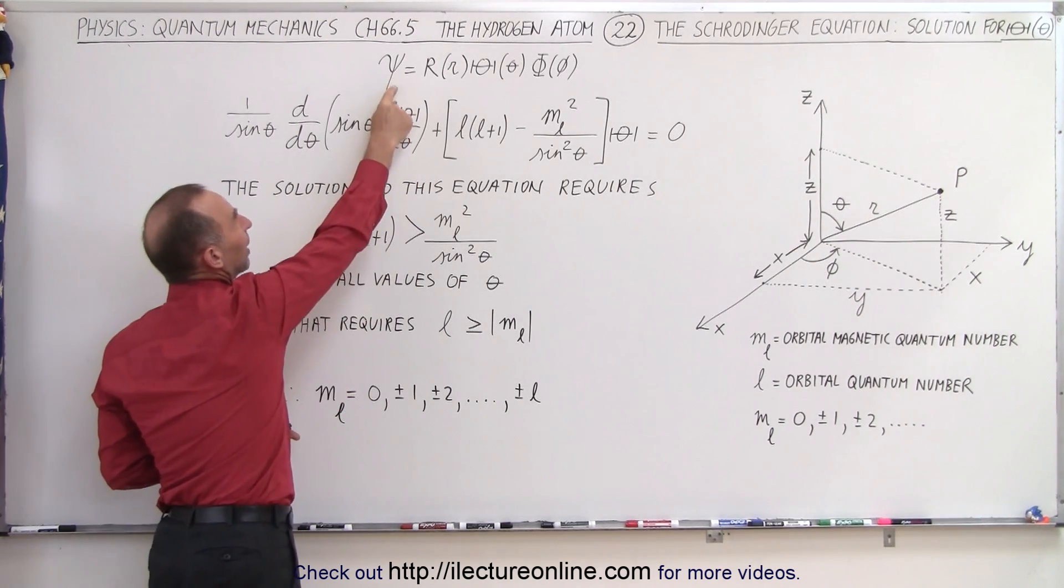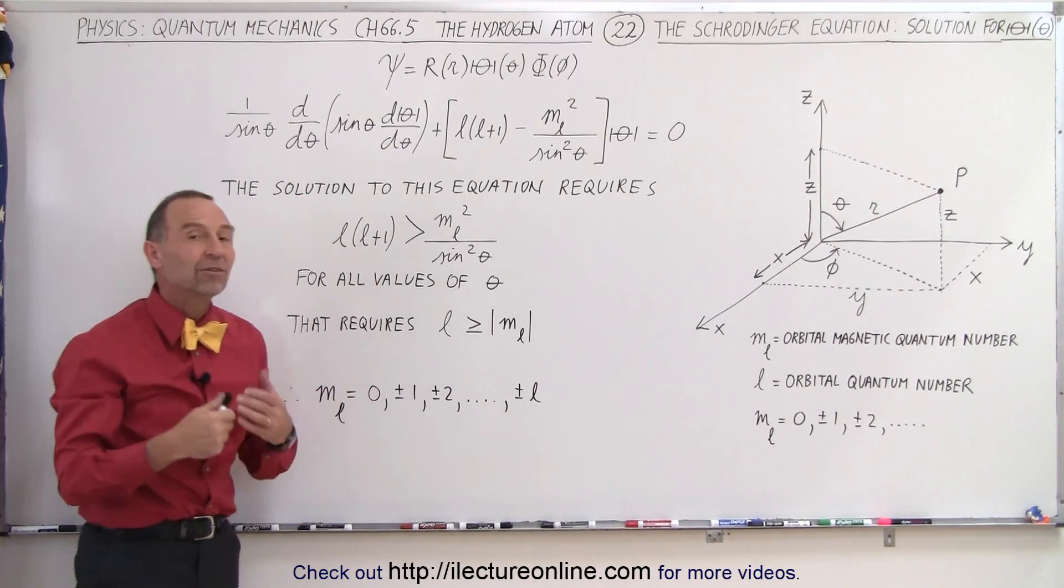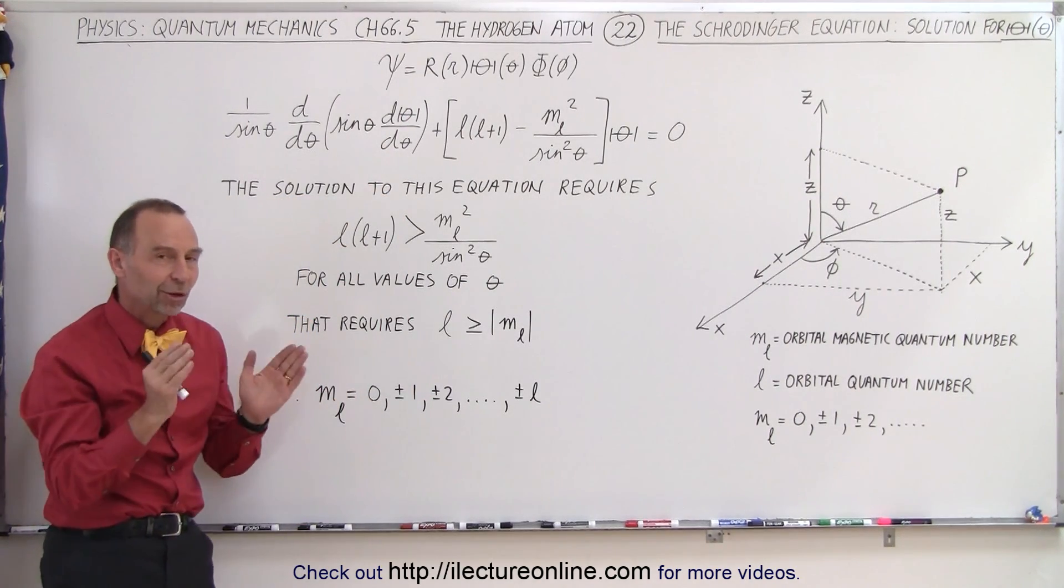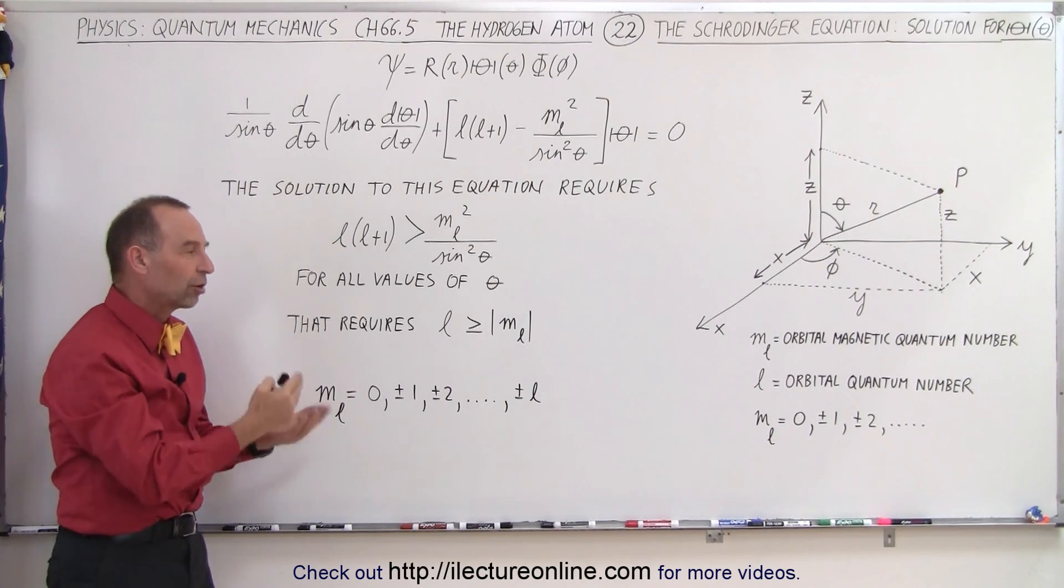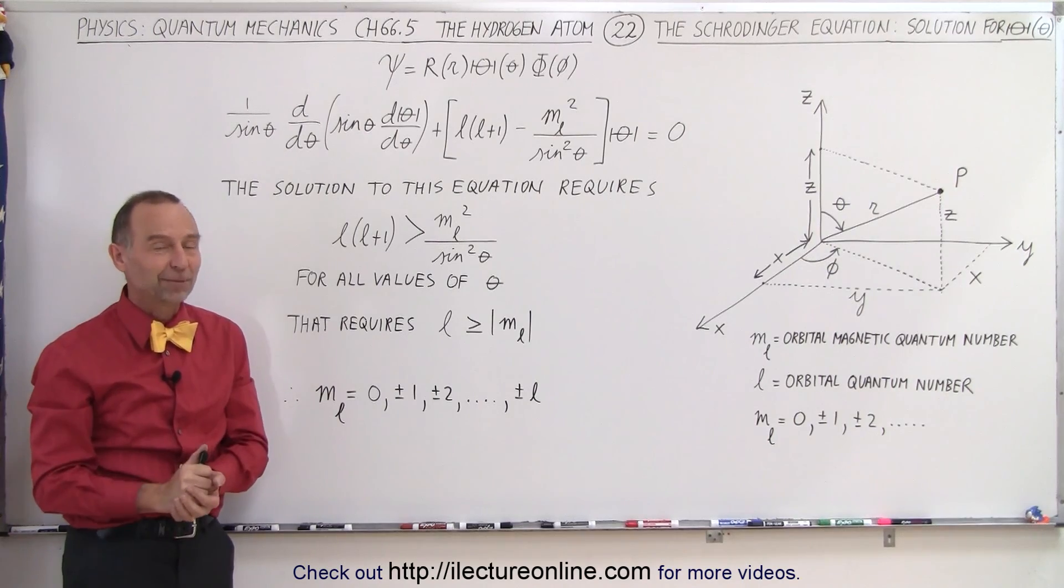And then later on we'll see how we actually solve this equation and find specific values for it, so that ultimately we can find the solution of the Schrödinger equation in three dimensions in spherical coordinates. So that's how we slowly figure out what the structure of the atom should be based upon the limitations of the differential equations, and that's how it's done.